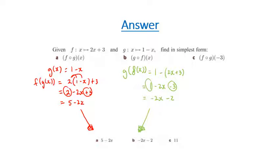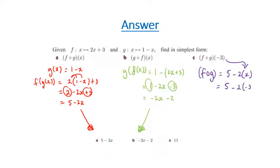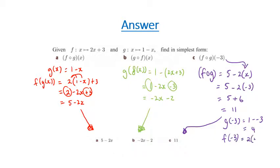With the last one, I'm looking for f of g of minus 3. I know from the previous question that f of g gave me 5 take 2 lots of x. But now instead of x, I'm going to have minus 3. So this becomes 5 minus 2 lots of minus 3, which is 5 plus 6, because minus 2 and minus 3 make 6, which is therefore 11. Alternatively, you could substitute g of minus 3 first: 1 take negative 3 equals 4, then substitute into f: 2 lots of 4 plus 3 equals 8 plus 3 equals 11. You'd get the same answer.